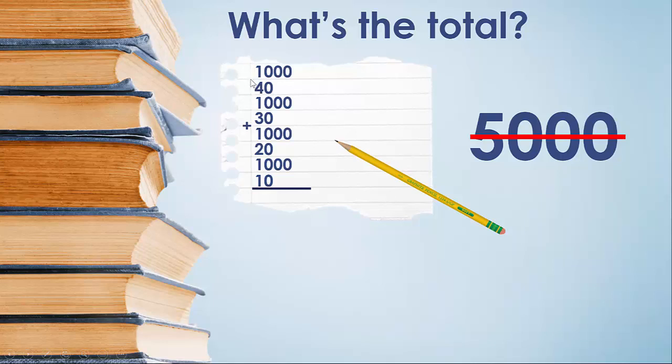If we start with 1,000 and add 40, we have 1,040. Add another 1,000, you have 2,040. Add 30, you've got 2,070. Add 1,000, we have 3,070. Add 20, you've got 3,090. Add 1,000, you have 4,090. Add 10 more, you have 4,100.